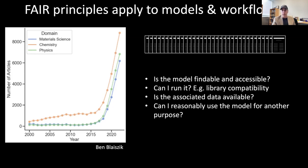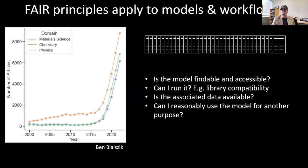That's why we have to do better. When we publish papers, we must ask: is the model findable and accessible? If I can access the Jupyter notebooks, will I be able to run them — considering library compatibility? Reproducing a paper from three years ago is a tall order. Is the associated data available, and can I reasonably use the model for other purposes beyond one model per paper?